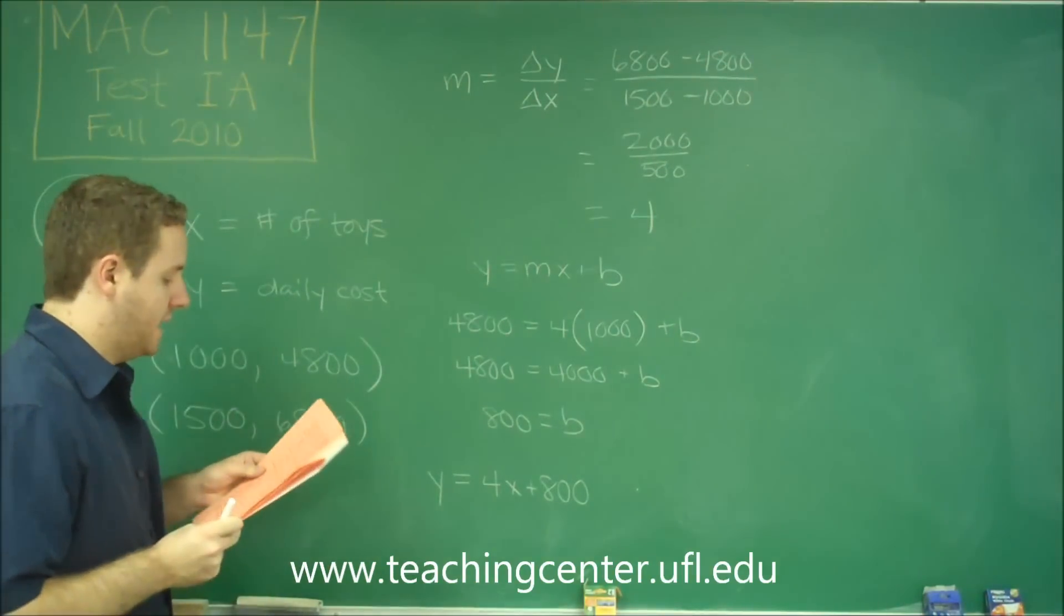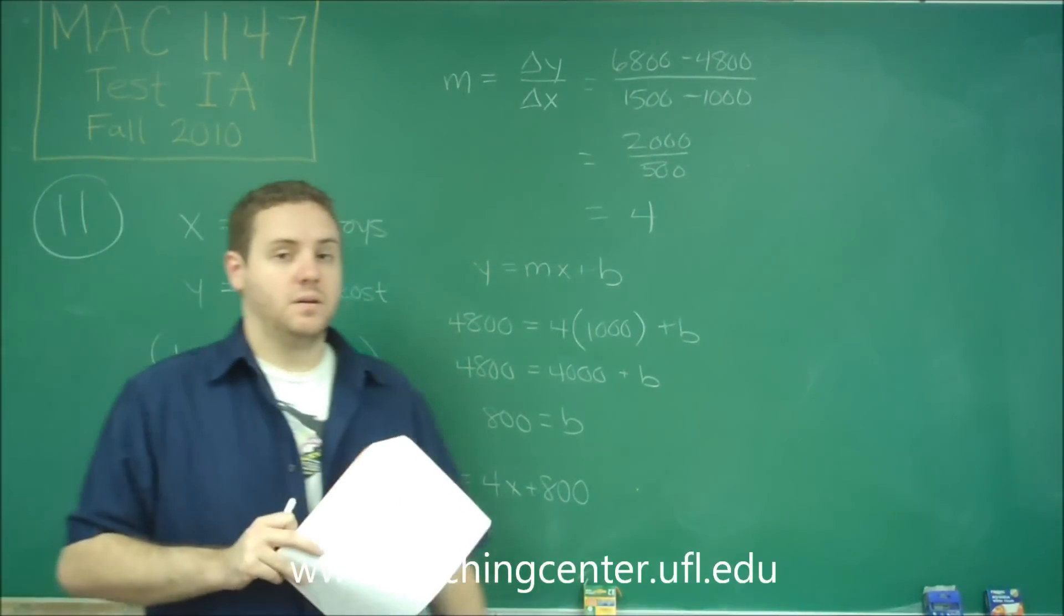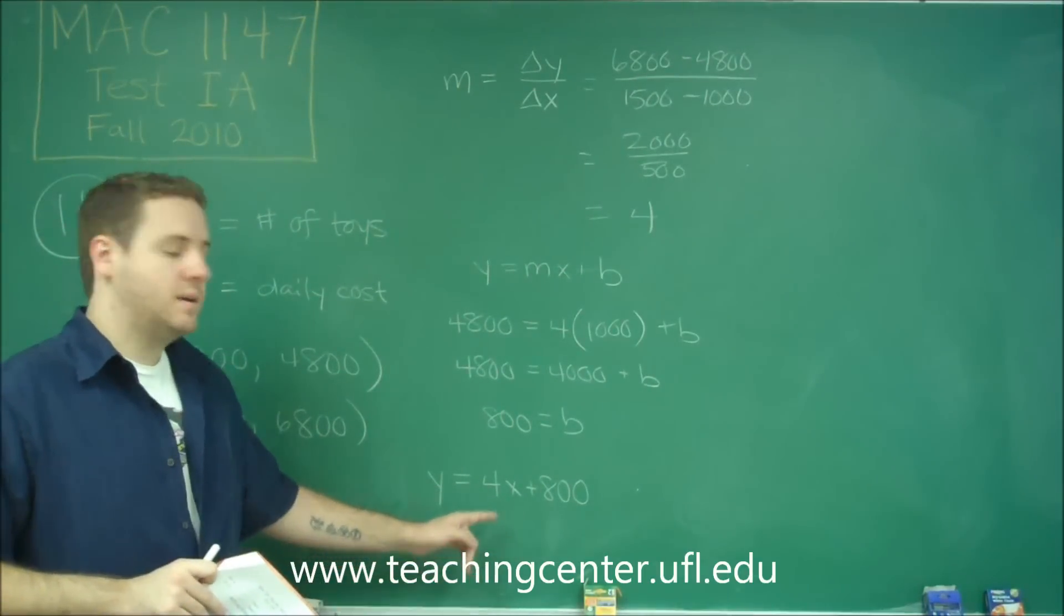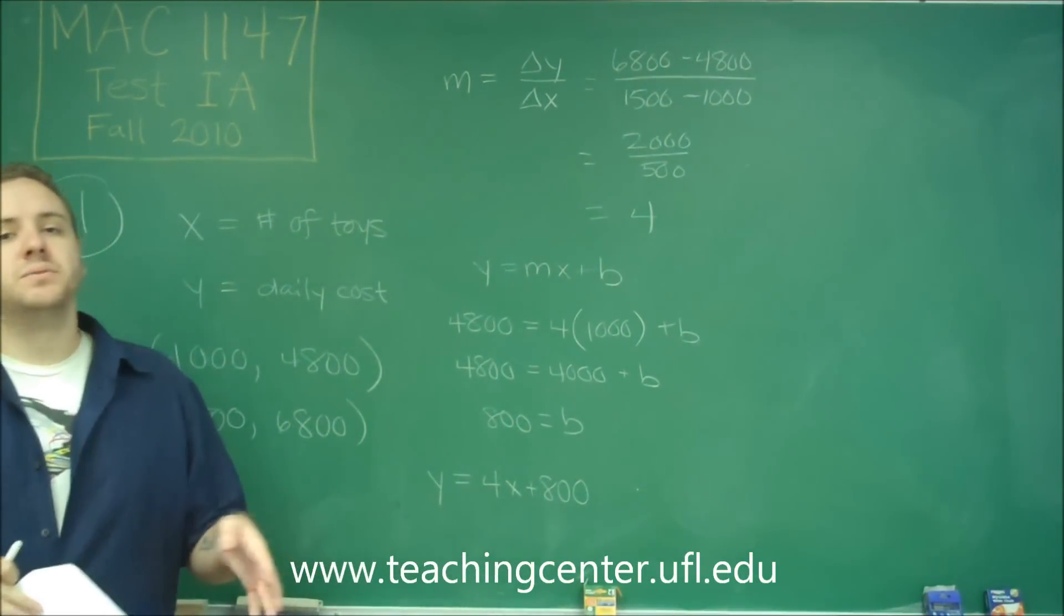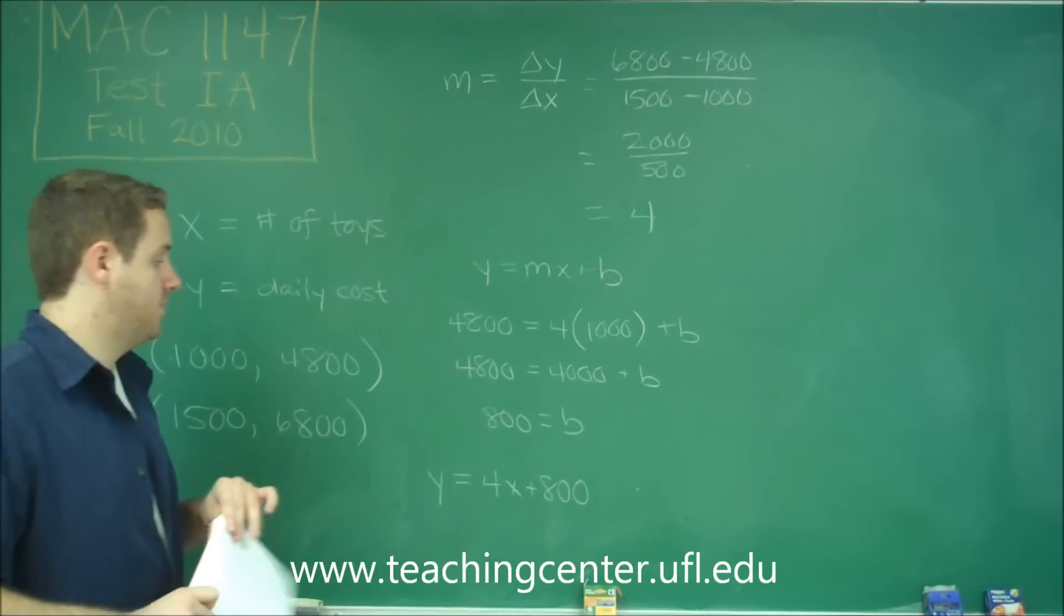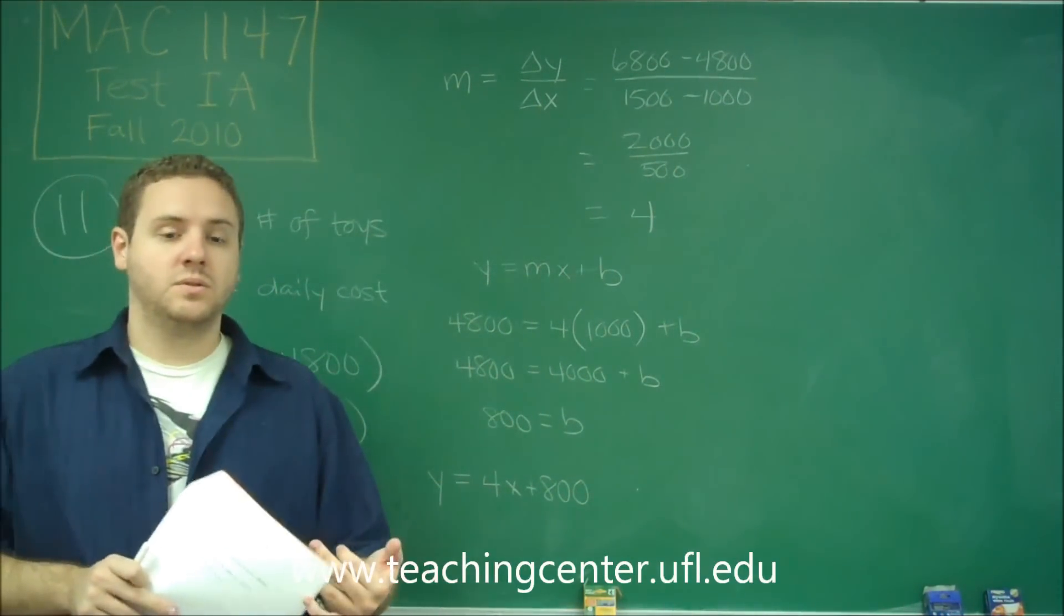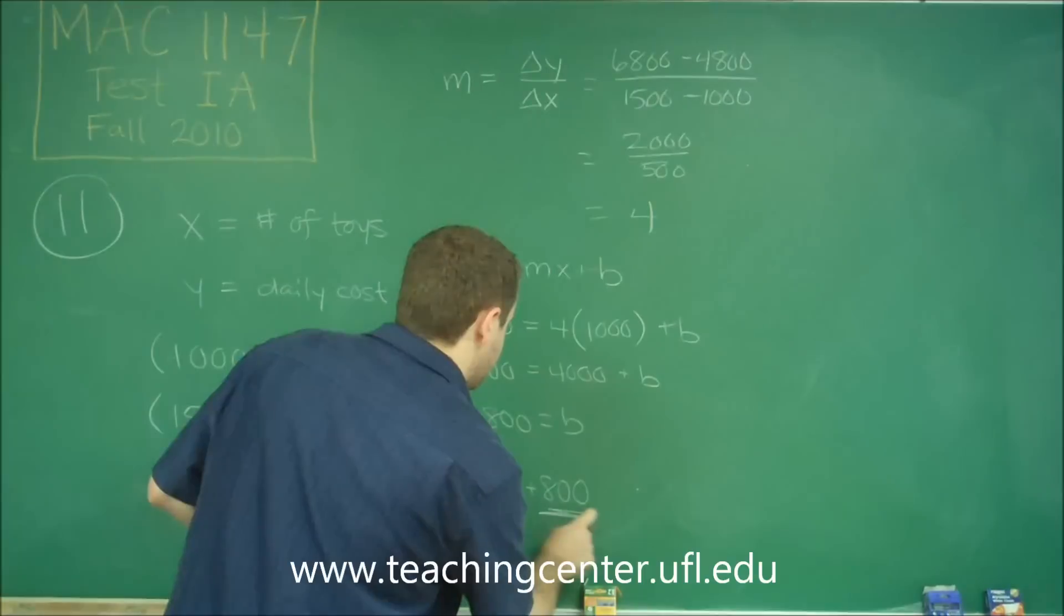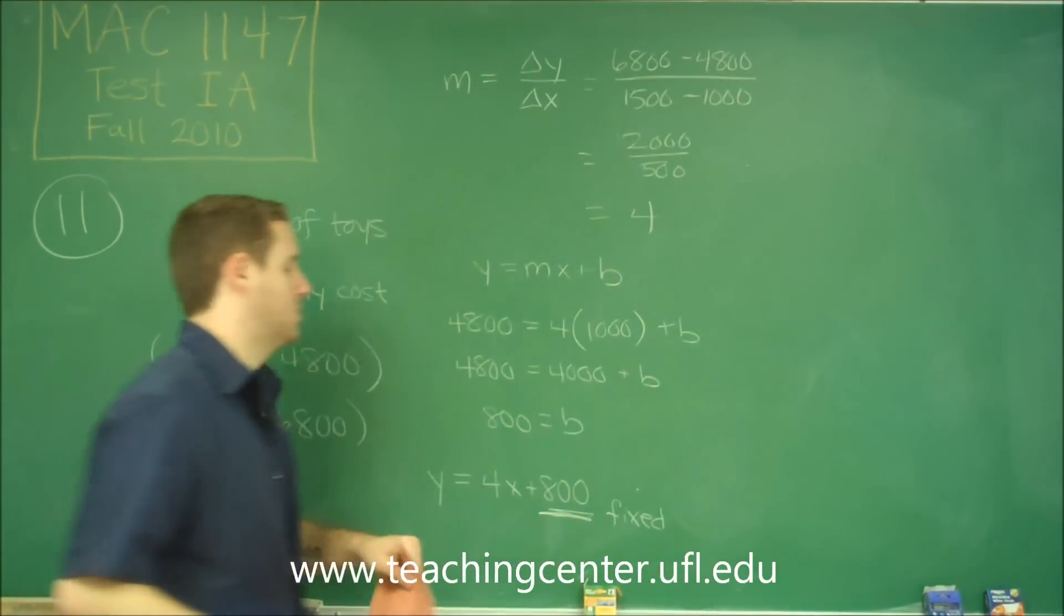So X being the number of toys, and Y is the amount it costs, you can see here that no matter how many toys you make, it's going to cost you $800. So that's probably like factory running costs, regardless of how many things you actually manufacture. But it's going to cost you $4 for every item you make also. So that daily fixed cost is the 800. This is the fixed portion of the cost.